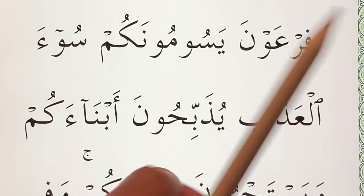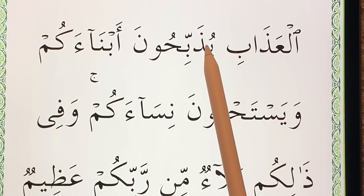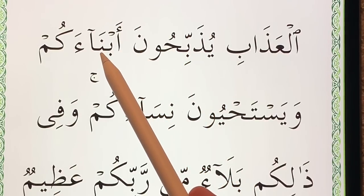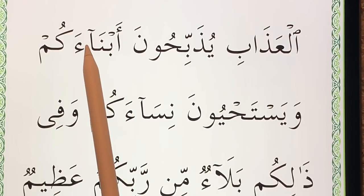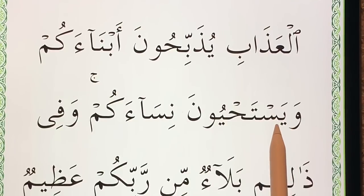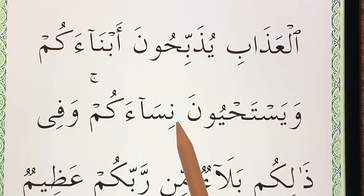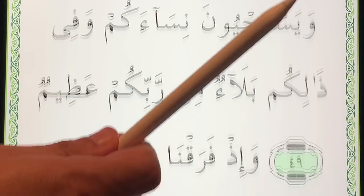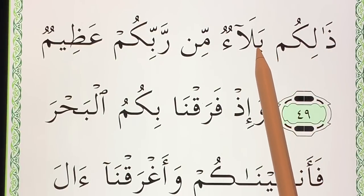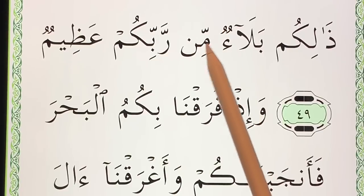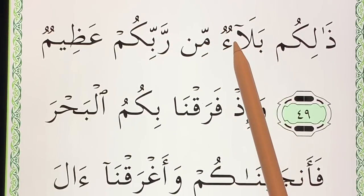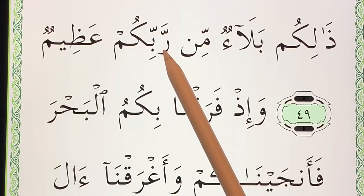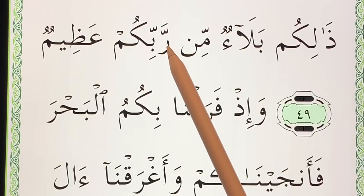سُوءَ الْعَذَابِ — الْعَذَابِ يُذَبِّحُونَ — يُذَبِّحُونَ أَبْنَاءَكُمْ وَيَسْتَحْيُونَ نِسَاءَكُمْ وَفِي ذَٰلِكُمْ بَلَاءٌ — This nun mixes with the meem here. بَلَاءٌ مِنْ رَبِّكُمْ — So this noon drops and becomes a ra.